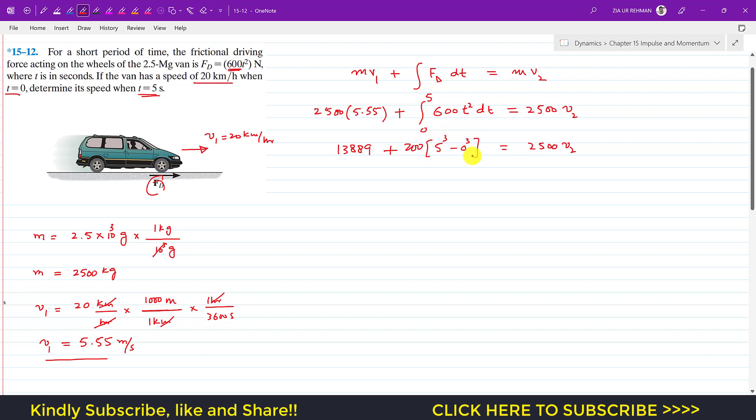So 5³ minus 0. If we divide both sides of the equation by 2500, we will get the velocity of the car after t equals 5 seconds.